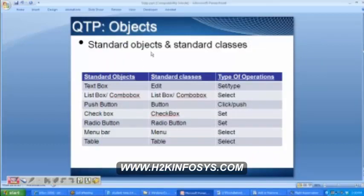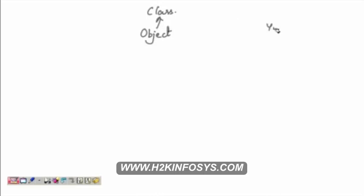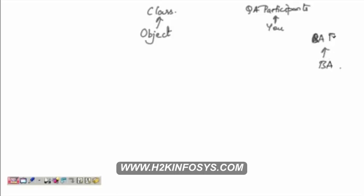All the standard objects are going to belong to a class. You take any object — it is going to belong to a class. Consider yourself: to which class do you belong? You are in the group of participants — you are a QA participant. Any Java or BA course student would belong to their respective participant class. Similarly, all the objects belong to a particular class — a particular group.